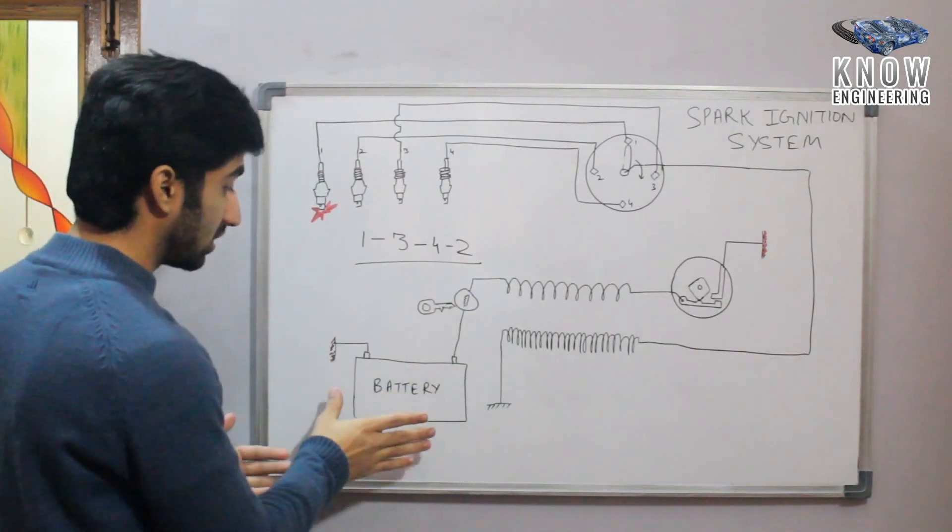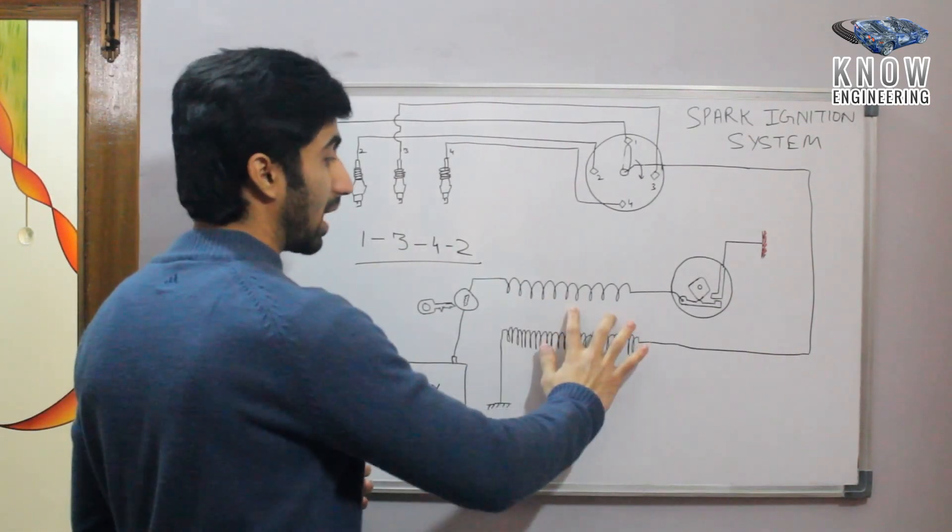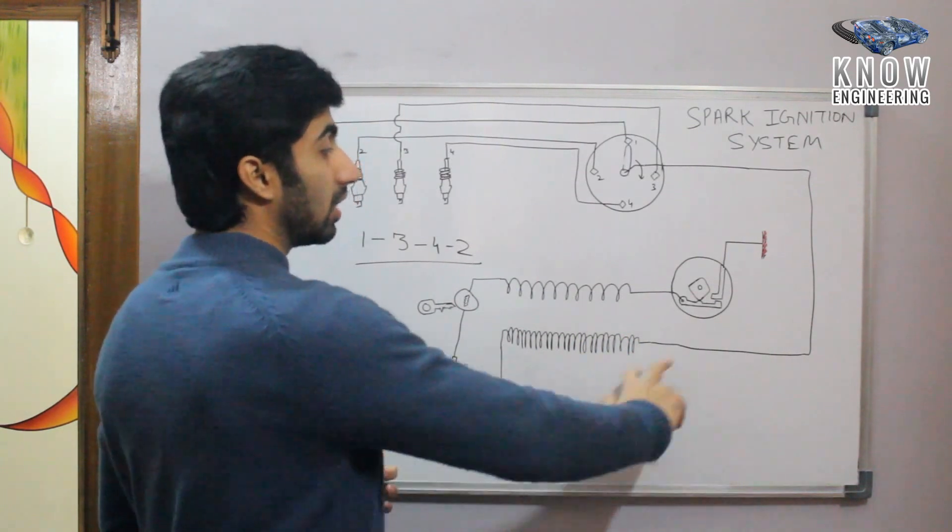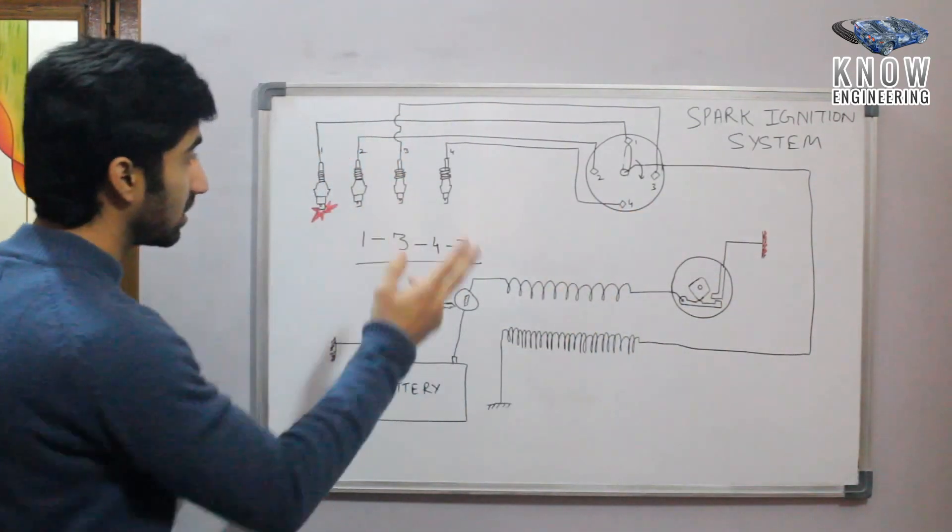What are these components? This is a battery, a car battery. This is a key. This is a primary coil. This is a secondary coil. This is a contact breaker. This is a distributor and these are the four spark plugs.